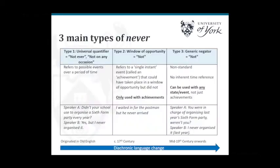There are three main types of 'never.' Type one is perhaps the one you'd think of first — it means 'not ever' or 'not on any occasion,' and refers to possible events over a period of time. For example, if Speaker A says 'didn't your school use to organize a sixth-form party every year?' and Speaker B says 'yes, but I never organized it' — meaning on any occasion there was a party, they didn't organize it. This is originally from Old English, but we still use it today.